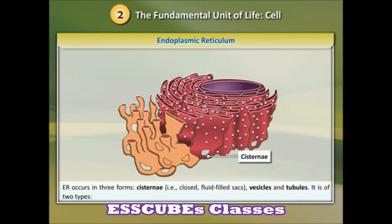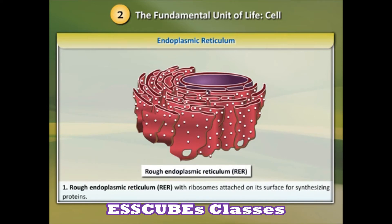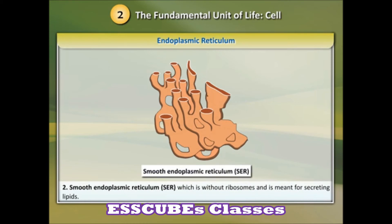ER occurs in three forms: cisternae, which are closed fluid-filled sacs; vesicles; and tubules. It is of two types: rough endoplasmic reticulum, RER, which has ribosomes attached on its surface for synthesizing proteins; and smooth endoplasmic reticulum, SER, which is without ribosomes.